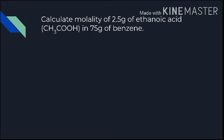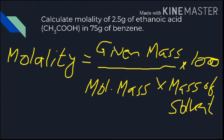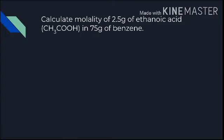Can we solve this another way? Yes. Molality = number of moles / (mass of solvent × 1000) = given mass / (molar mass × mass of solvent × 1000). Just put the values directly and calculate the molality. This simplifies the steps — instead of finding number of moles separately, you can put all given values directly.